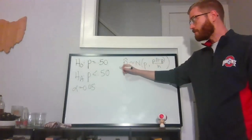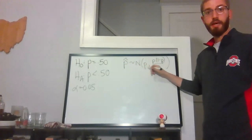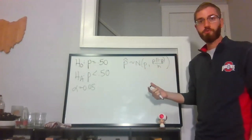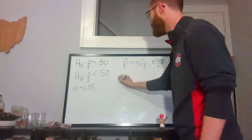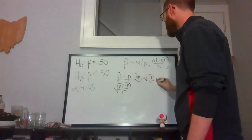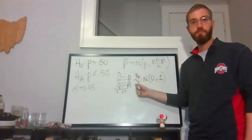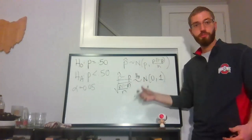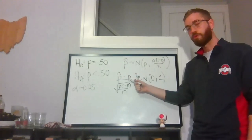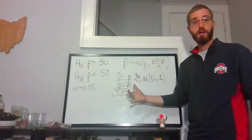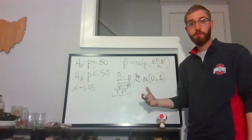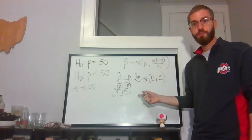So p-hat has a sampling distribution approximately normal with mean p and variance p(1-p)/n — we've seen this many times with the CLT. I'll standardize it to get a standard normal: (p-hat minus p) divided by square root of p(1-p)/n. I'll call this z rather than t, since it follows a standard normal N(0,1). I'll mark it with the null hypothesis symbol over the tilde to emphasize this distribution holds only under the null assumption.